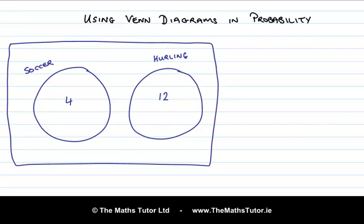We can use Venn diagrams to show the sample space for a scenario. This can help us work out the possibilities of the different events relating to that scenario.